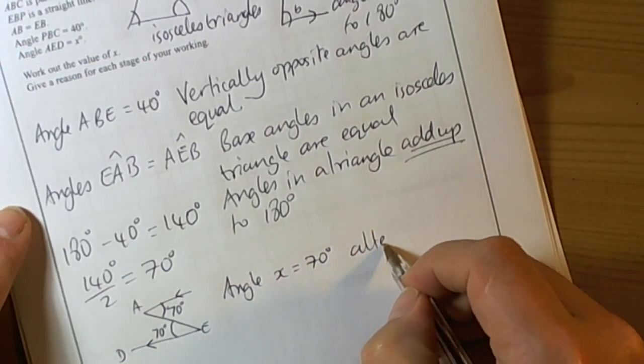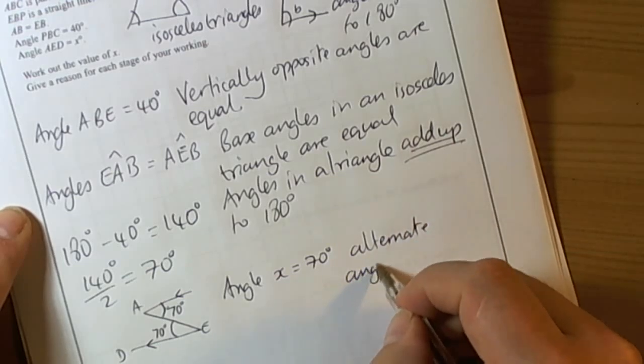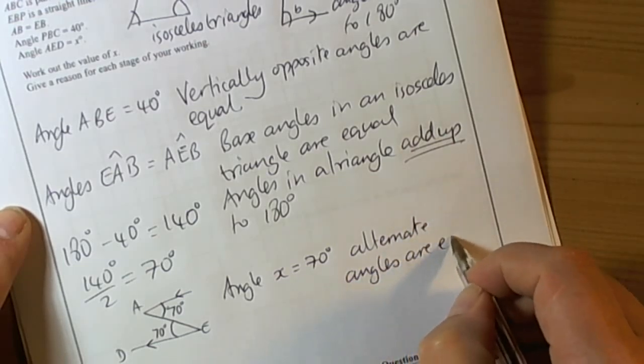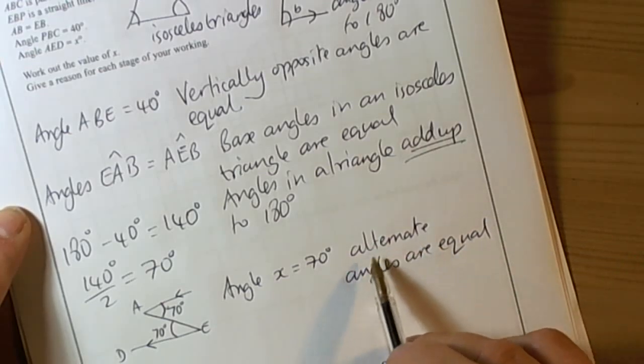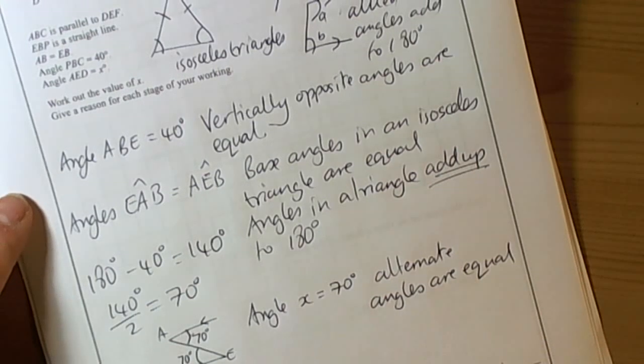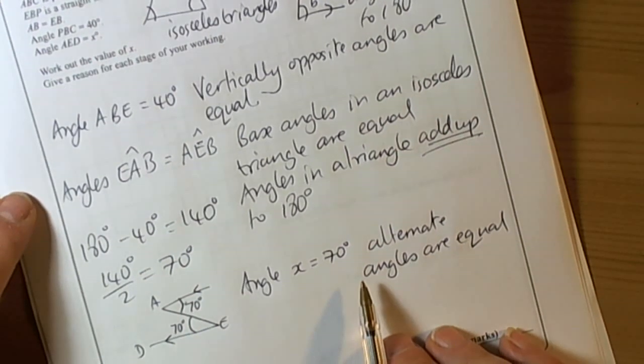Reason being alternate angles are equal. Don't just put alternate angles, you've got to say what it really means: alternate angles are equal. So we found the angle is 70 degrees for X.